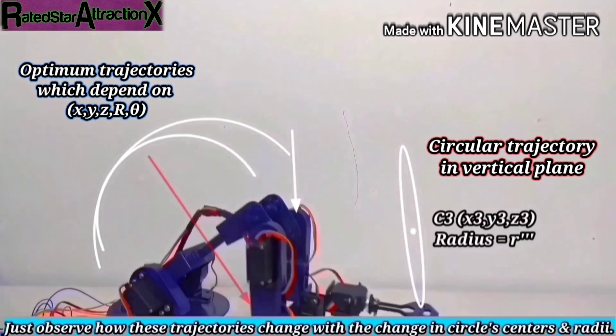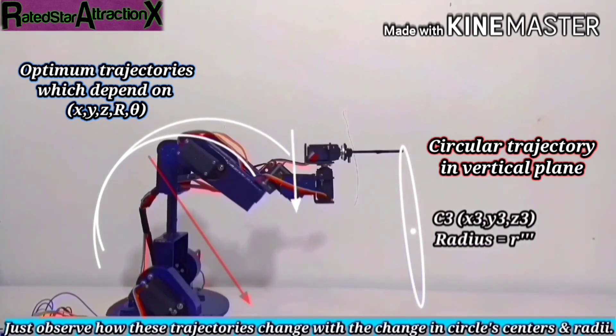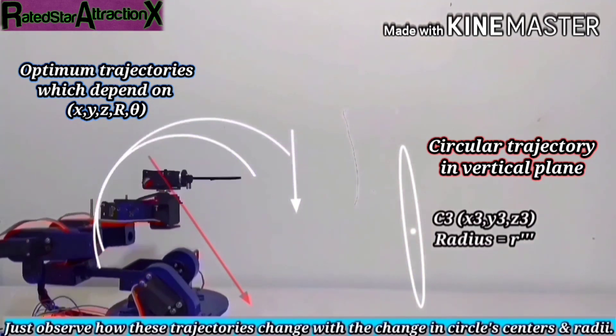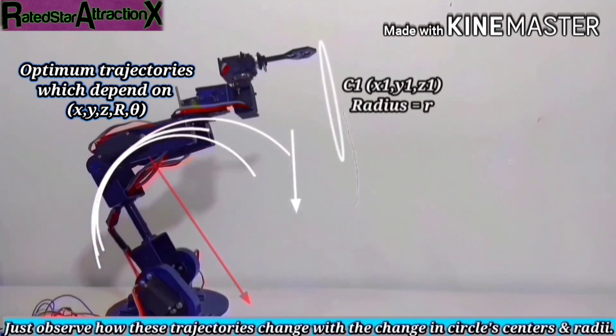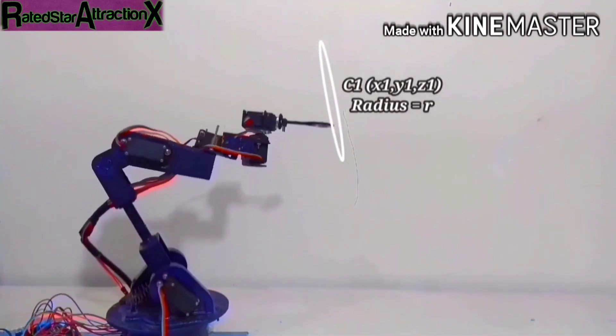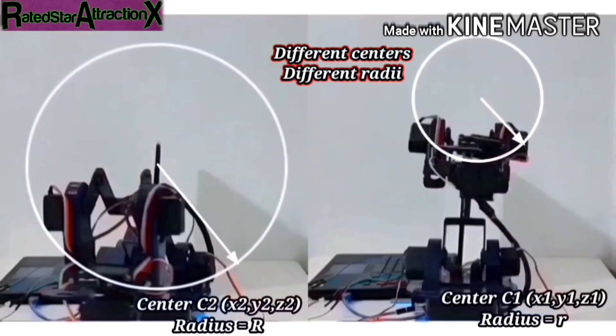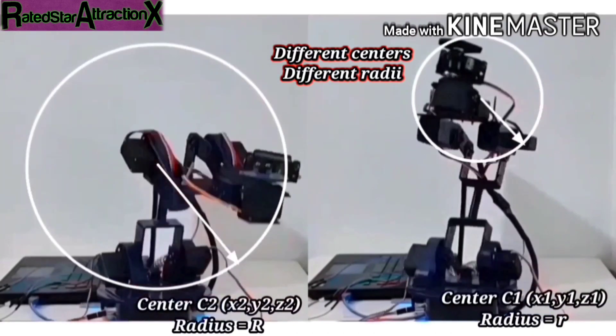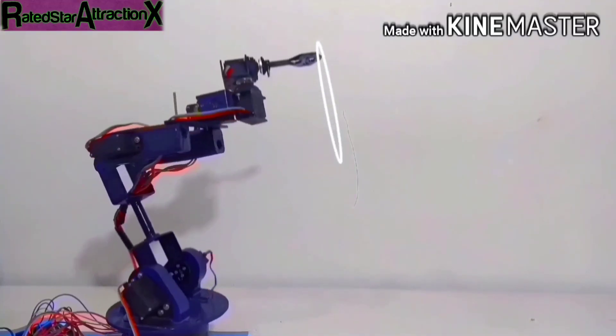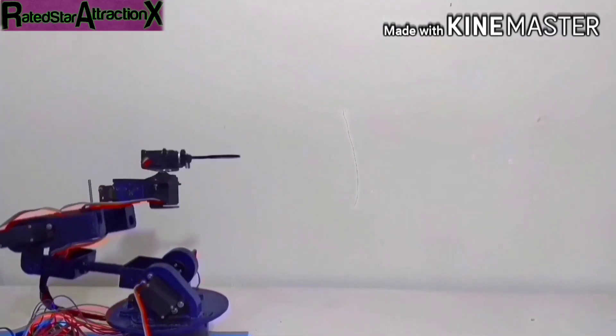Then every single thing—from the determination of the optimum path to reach the desired point on the circle to the end effector's motion in the vertical circular trajectories—every damn thing is gonna be done by the robot himself using some generalized algorithms and maths. It doesn't matter where the center lies or what's the radius or theta. Simply tell the parameters and the robot is gonna get your job done.